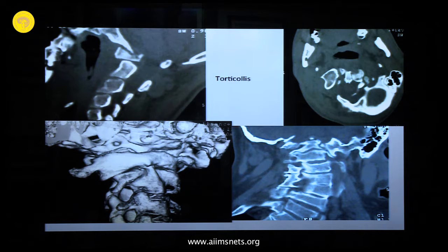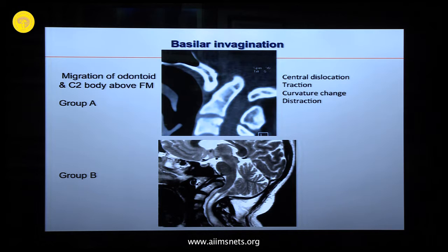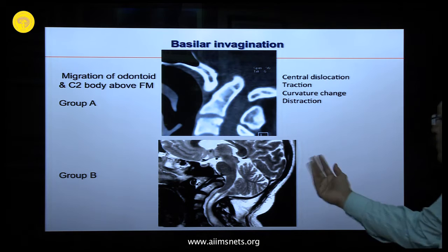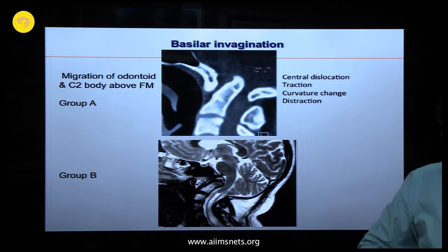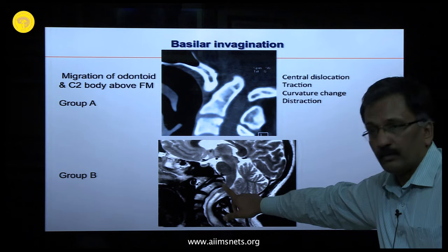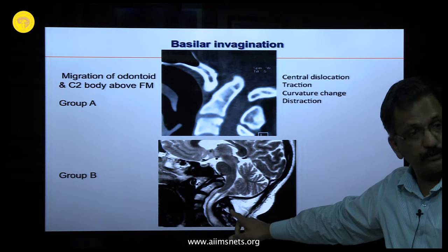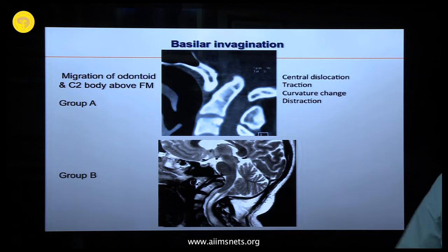Basilar invagination is divided into two groups. One is a straight central invagination. The other is basilar impression, where the odontoid is not above McRae's line — from anterior to posterior margin of the foramen magnum — yet there is severe cervicomedullary kink due to platybasia, with the bony foramen magnum actually invaginating inside.